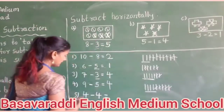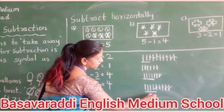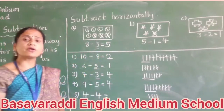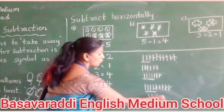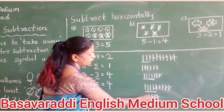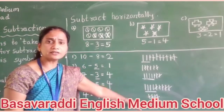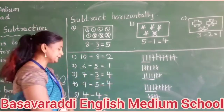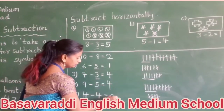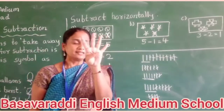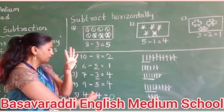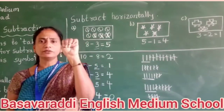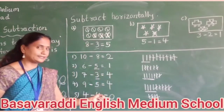Next one: four minus four. One, two, three, four. We have to cross all four: one, two, three, four. Any lines remaining? No. That means zero. I want four fingers, and in that four fingers we have to minus four: one, two, three, four — nothing is there. That is zero.